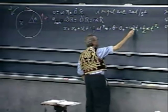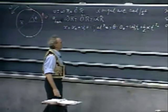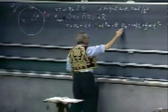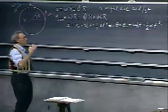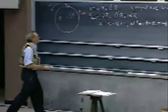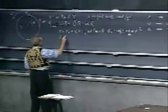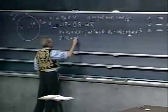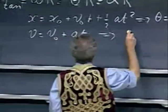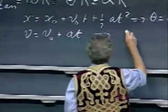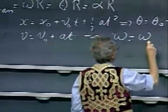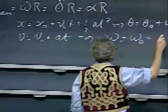It's that simple. Omega₀ is the angular velocity at time t equals zero, and theta₀ is the angle at t equals zero relative to some reference point. And v = v₀ + at becomes omega = omega₀ + alpha·t.